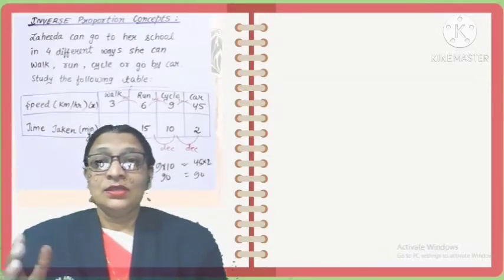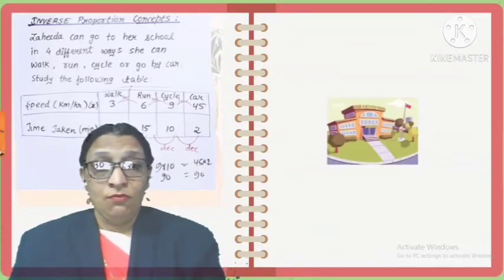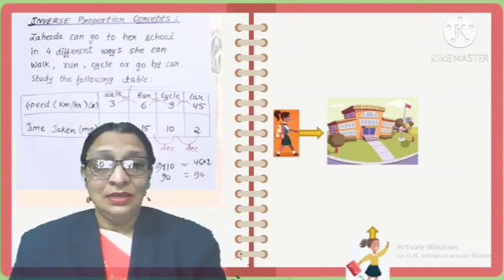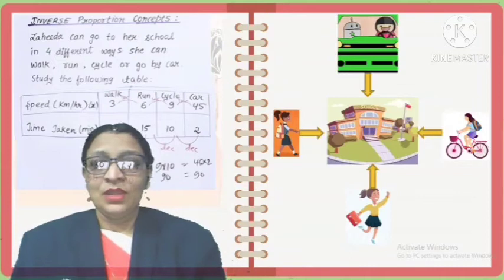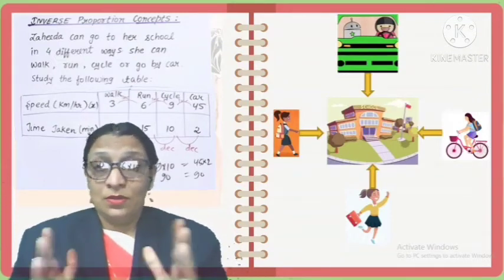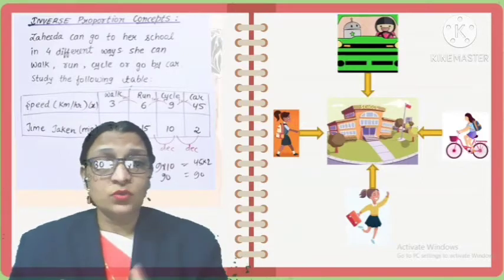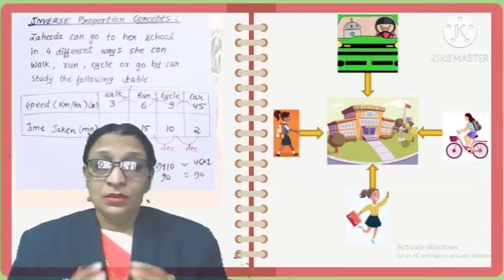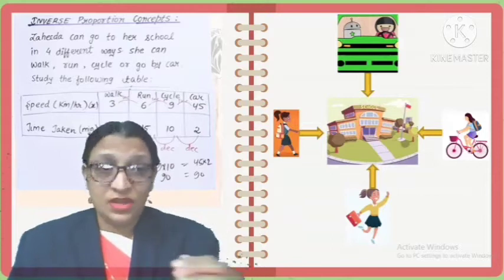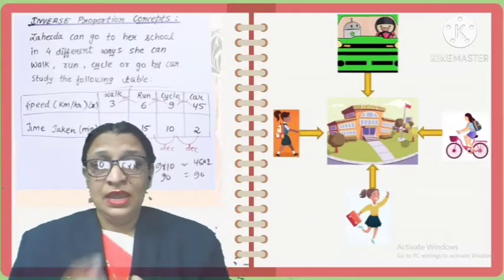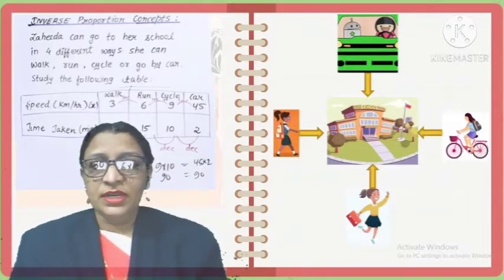Here, Zaheeda can go to her school in four different ways: she can walk, run, ride a bicycle, or go by car. When she walks, the time required to reach school will be more. When she runs, the time required will be less. When she rides a bicycle, the time will be further less. And if she goes by car, the time will be least.